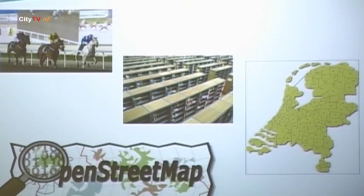Next to copyright, in Europe we also have database rights. Copyright protects creative things, but if you have a non-creative thing - like a list of postal codes, a library of factual items, results of a sporting event, or GPS coordinates for a road - that is not protected by copyright. They are facts.